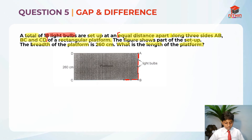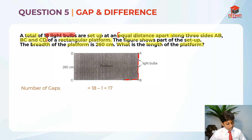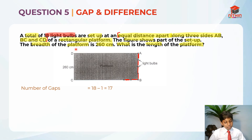For the first step, the number of gaps equals 18 minus 1, which is 17. What do we mean by number of gaps? On these three sides there are 18 light bulbs set up, and between any two adjacent light bulbs there is one gap. So between 18 light bulbs there are 17 gaps.